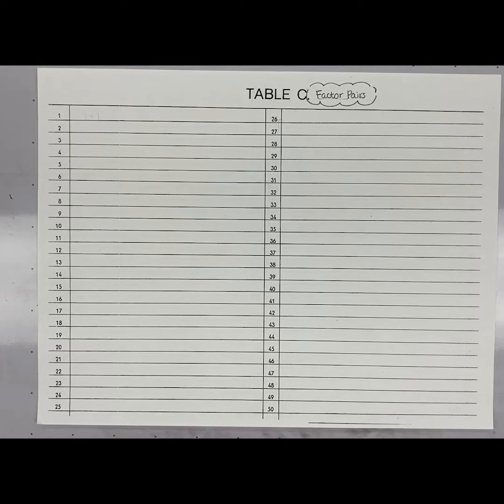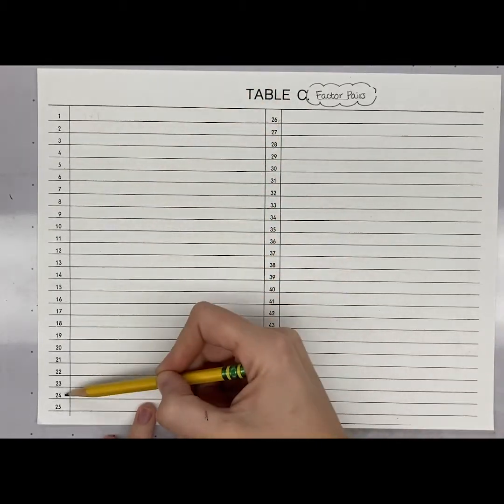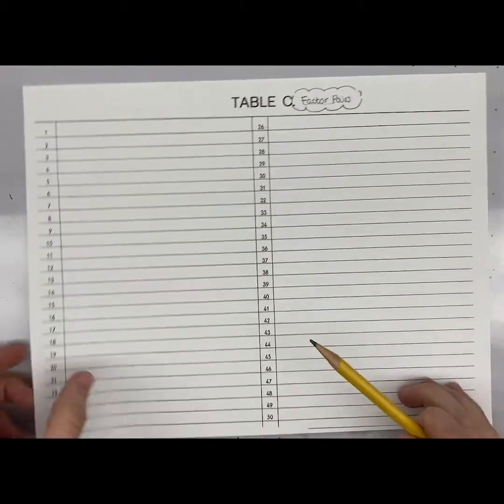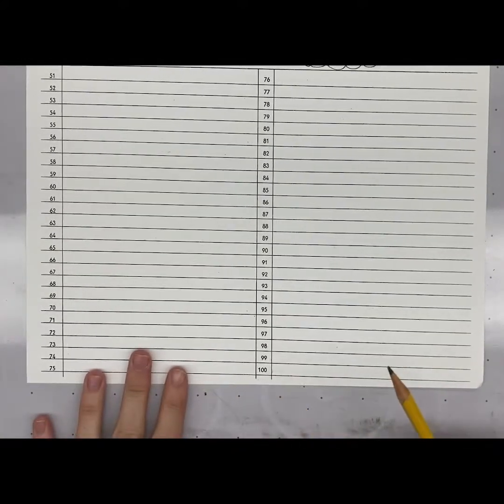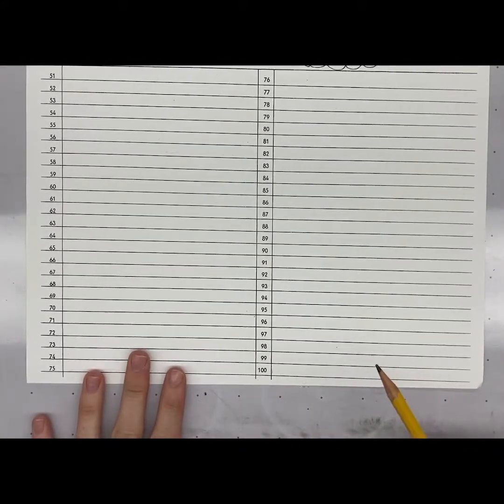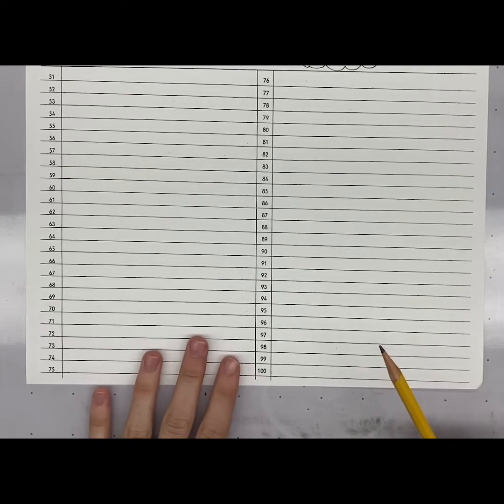In tables A and B, we were trying to find multiples of 2, or multiples of 3, or multiples of 7. And now we're doing the opposite. We have been given the multiples on table C, all the way up to the multiple 100. And we are going to investigate and try to find as many factor pairs as we can for each multiple.